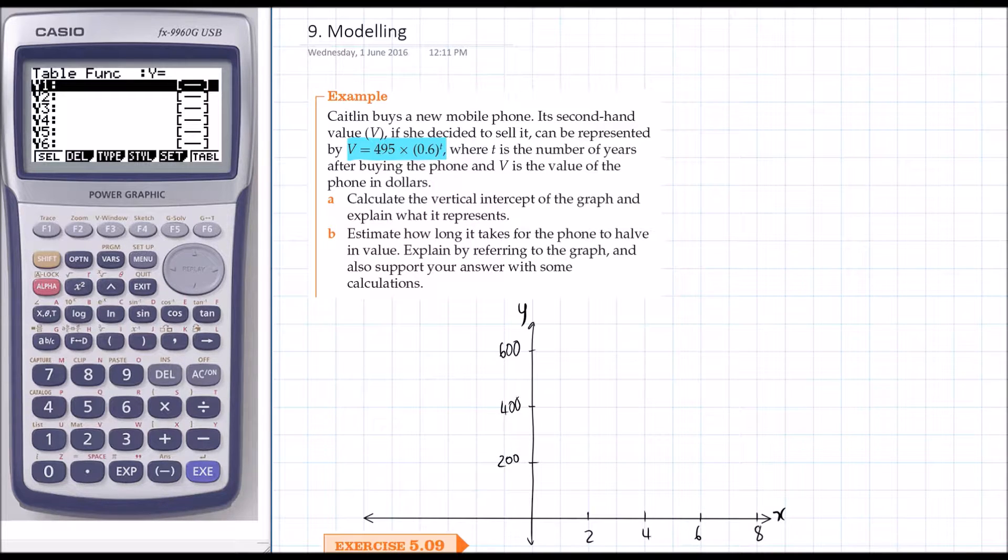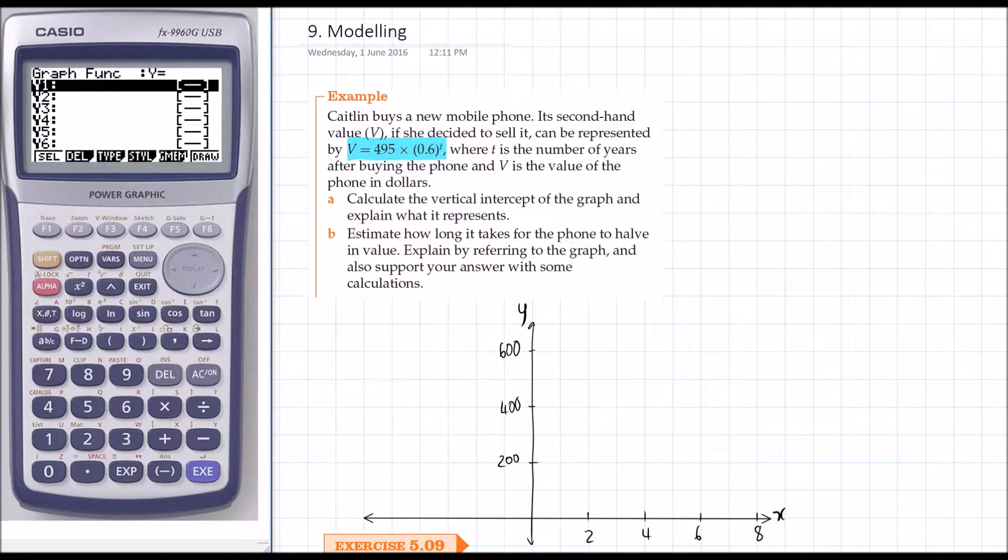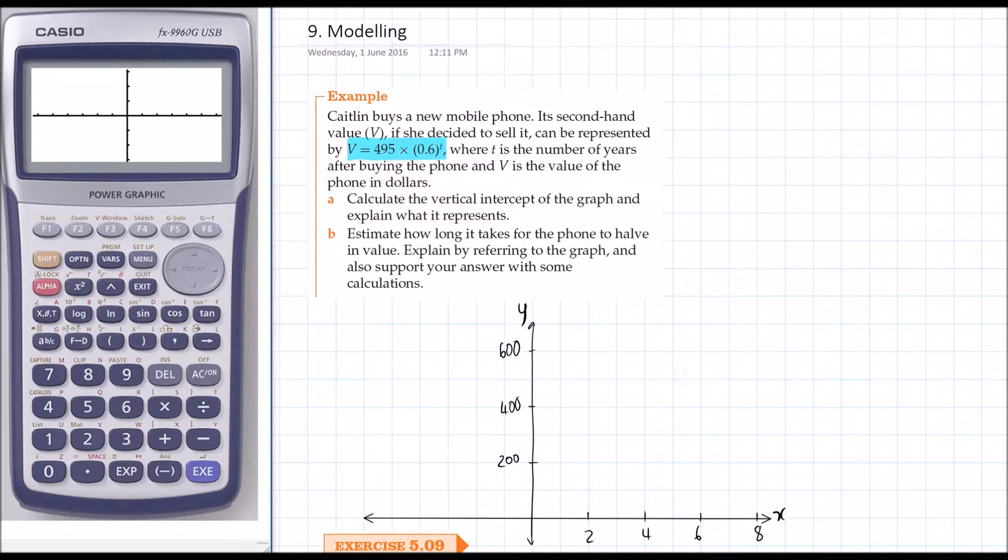So calculate the vertical intercept of the graph and explain what it represents. What I'm going to do here is actually graph it. We'll go into graph mode and put this in: 495 times 0.6 to the power of x. We can see it doesn't show on our graph because of our scale, so we have to change our viewing window.